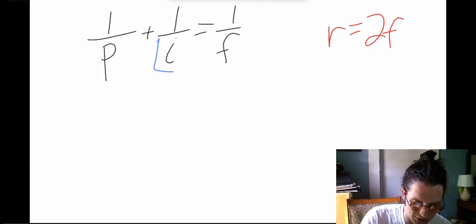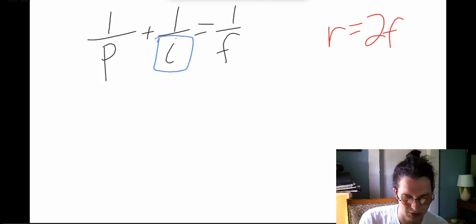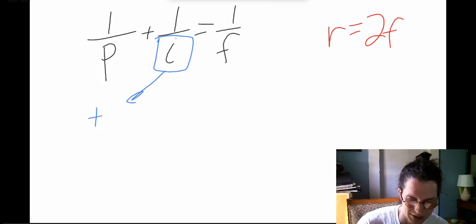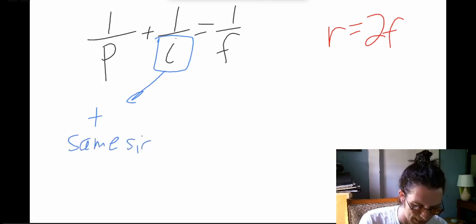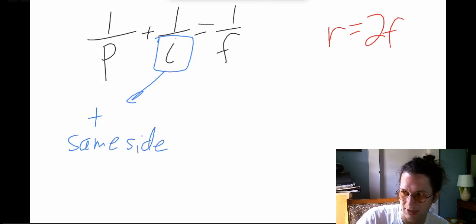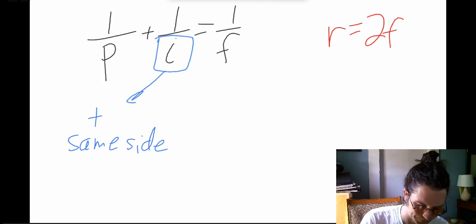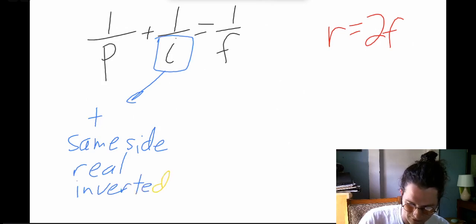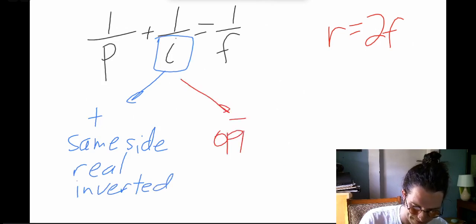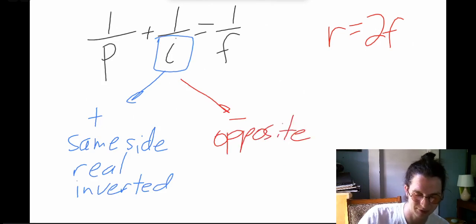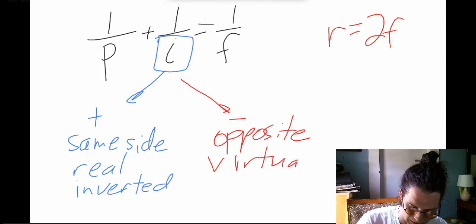Generally, you plug in your focal length, place an object at some distance, and get an image distance. If you get a positive image distance, that tells you the image is formed on the same side as the object. It also tells you that you have a real image and that it is inverted. If you get a negative image distance, the image is formed on the opposite side, and that is a virtual image that is upright.